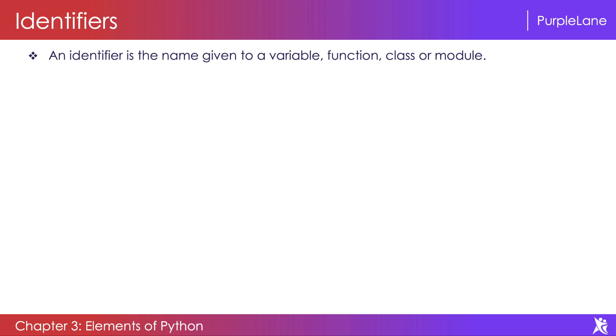An identifier can contain a combination of letters, digits, or underscore. Of course, letters are both uppercase and lowercase. An identifier can always start with a letter or underscore. It should not start with a digit.